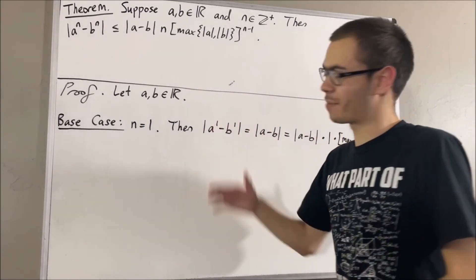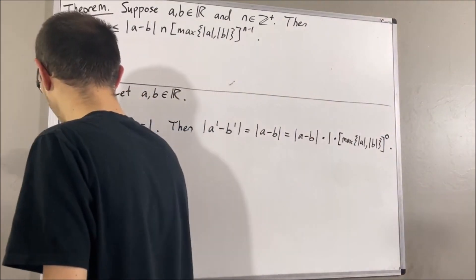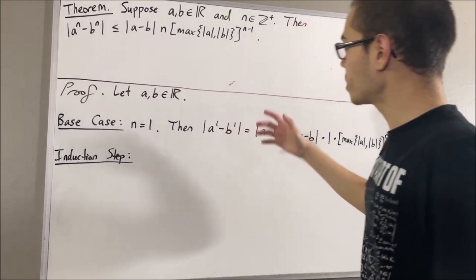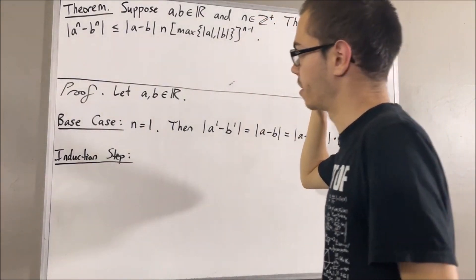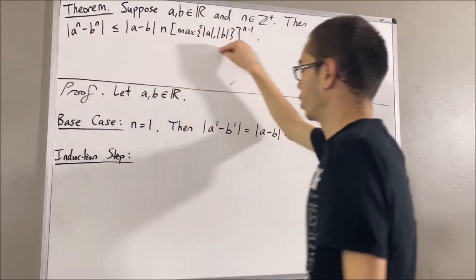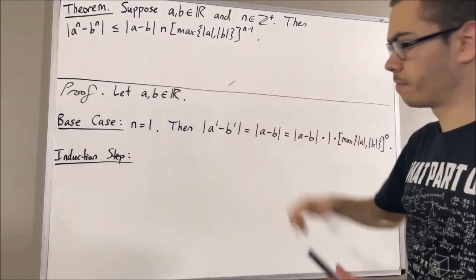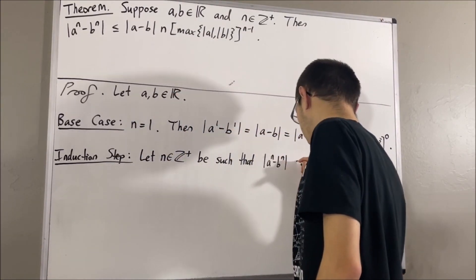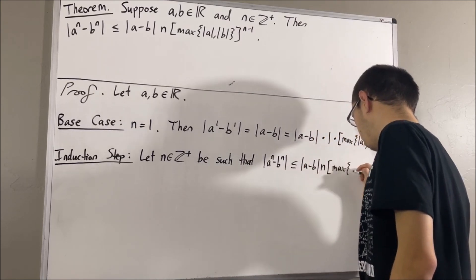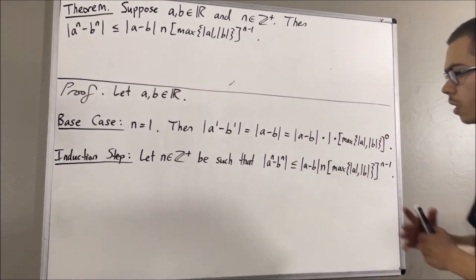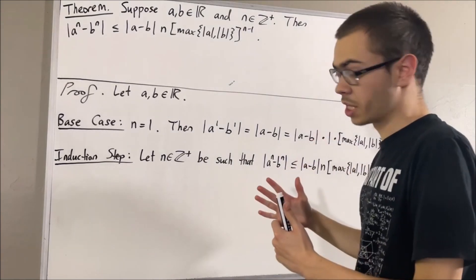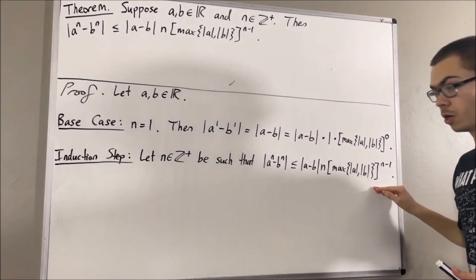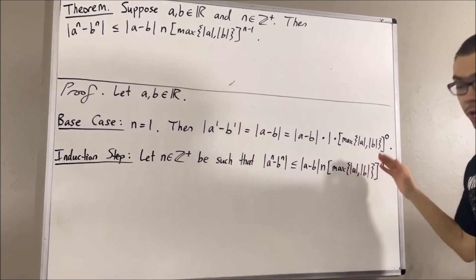Now let's move on to the induction step. In the induction step, we give ourselves an arbitrary positive integer n, and we assume that this inequality holds for that positive integer n. The goal of the induction step is to show that this inequality is also true where instead of n, we have n plus 1.